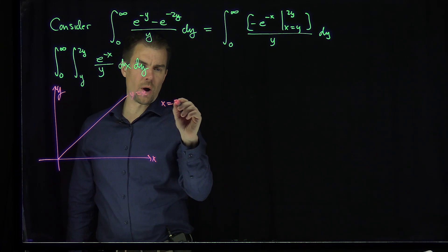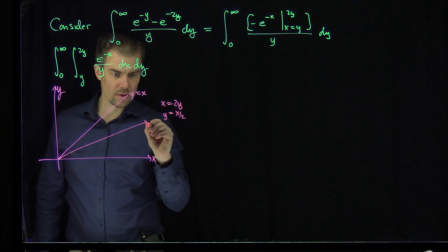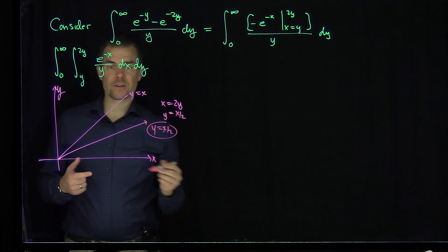The bottom limit is y equals x. The top limit is x equals 2y, which is the same as y equals x/2. That's y equals x/2.